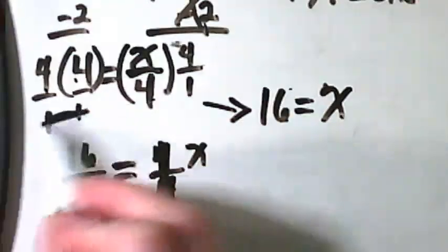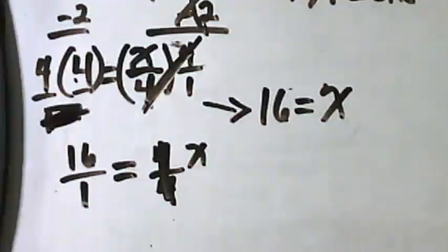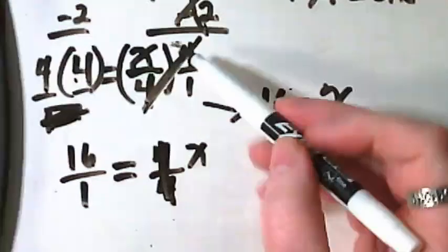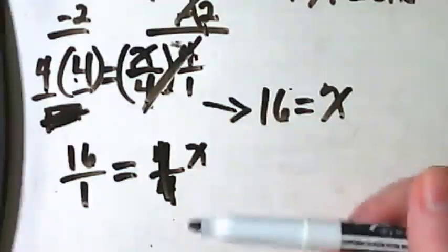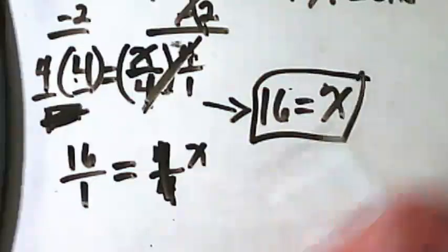What we would really write is just 16 equals x. We don't have to worry about these invisible ones. And these cancel each other out. You'll hear a lot of people say that. But it's not really canceling. It's turning it into an invisible one. And there's our answer.